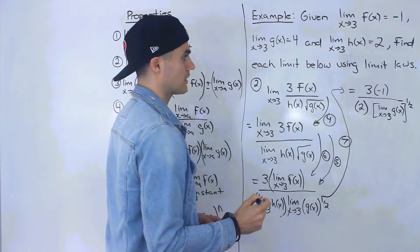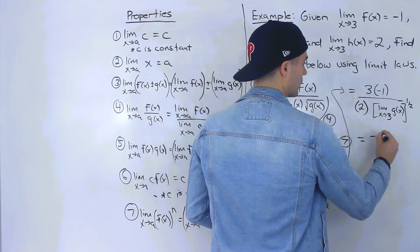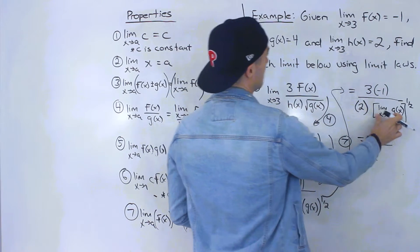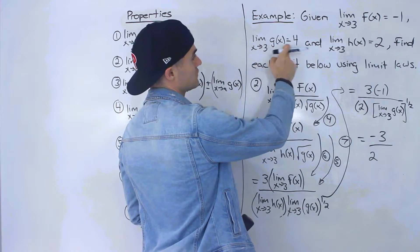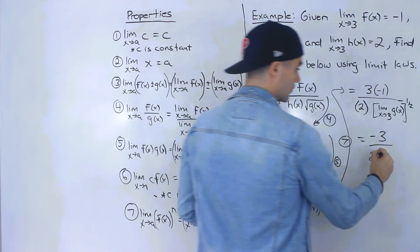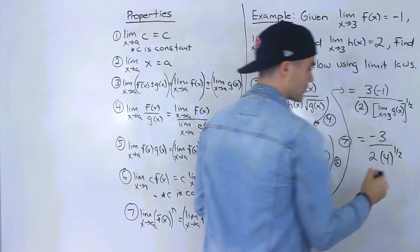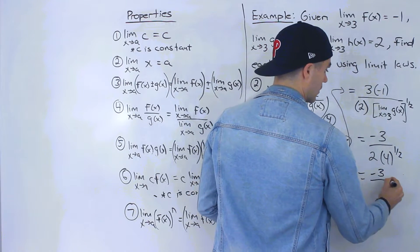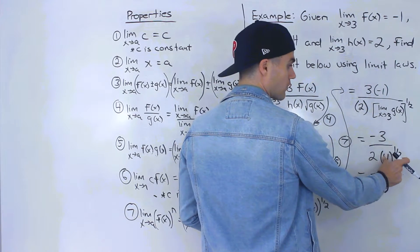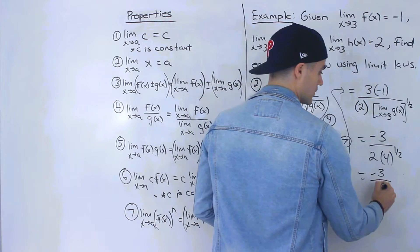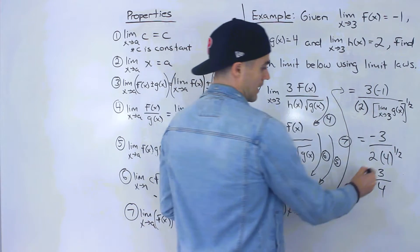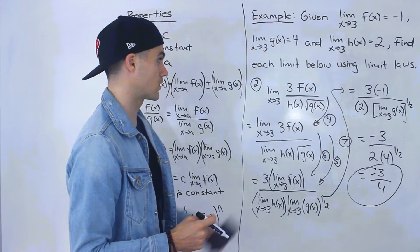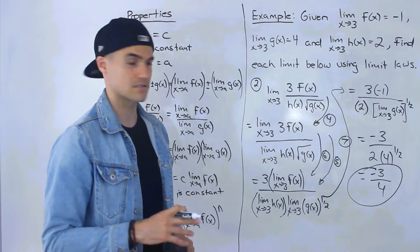In the numerator we have 3 times negative 1, which is negative 3. Then we have 2 for the h of x limit. For the square root part, the limit as x approaches 3 of g of x is 4, so we have 4 to the power of a half, which is the square root of 4, which equals 2. So we get negative 3 all over 2 times 2, which is 4. Therefore negative 3 over 4 is the answer to number 2 — more complex than number 1, requiring more limit laws.